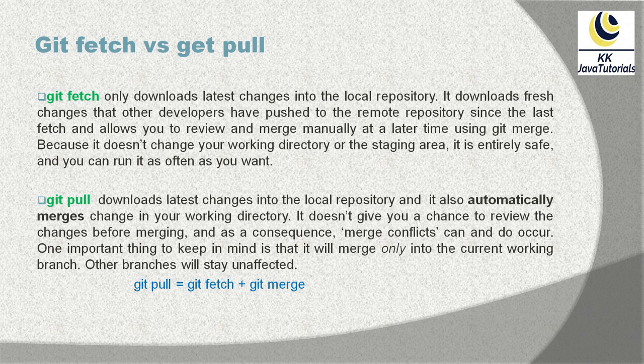One important thing to keep in mind is that git pull will merge only into the current working branch; other branches will stay unaffected. When you use git pull, it brings all the changes from the remote branch to your working directory. Internally it does two things: git fetch — which brings all the changes from the remote branch to local repository — plus git merge, which merges those changes into your working directory. Because of that, if your working directory and the remote branch both have changes in the same file and the same line, you may get a conflict.